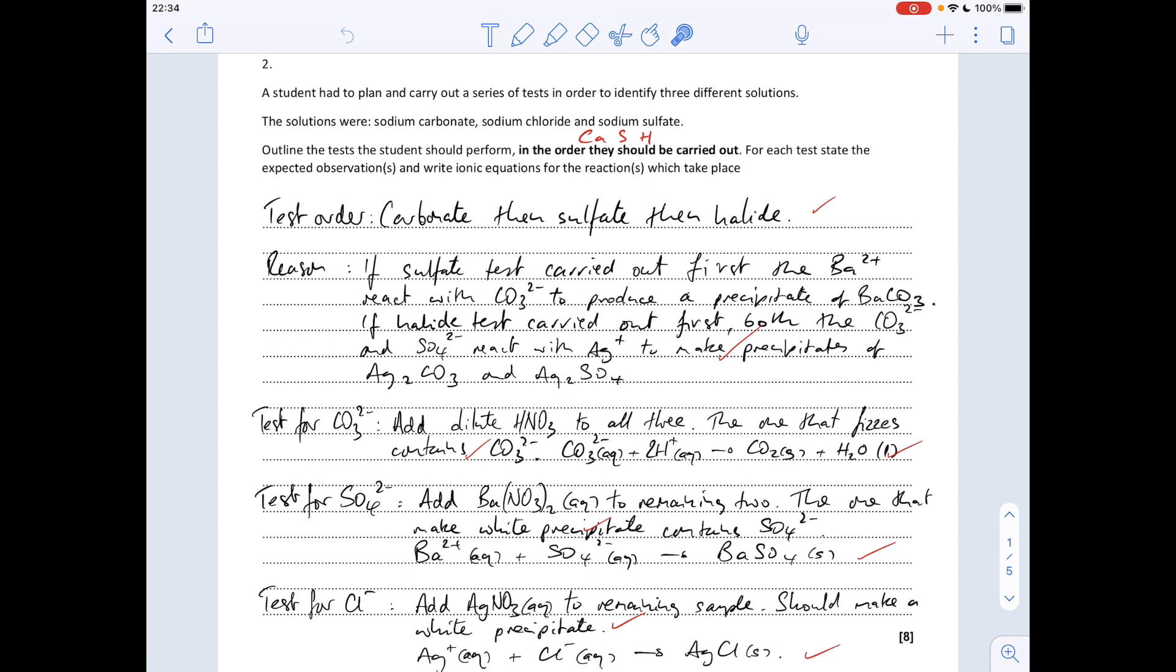The reason for that: if the sulphate test was carried out first, the barium ions that you add to test for the sulphate ions can also react with carbonate ions, so that would give a precipitate of barium carbonate and obviously that would lead you to think that it was a sulphate whereas in fact it's a carbonate, so it's like a false positive.